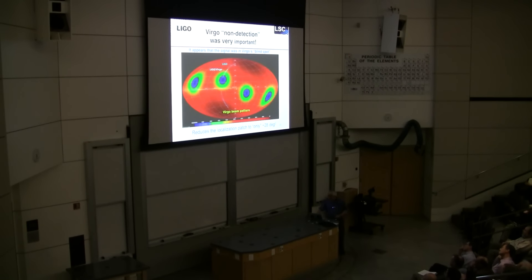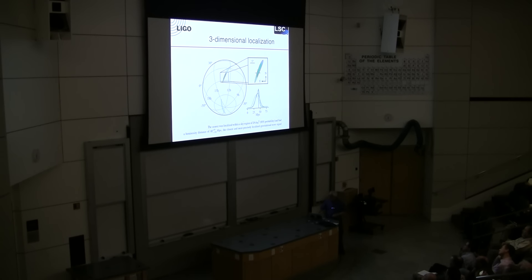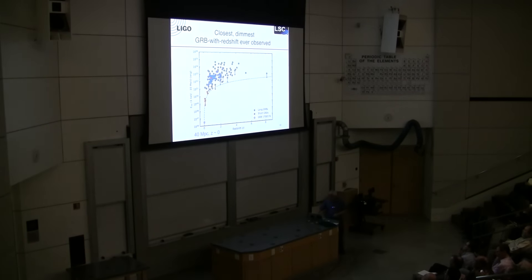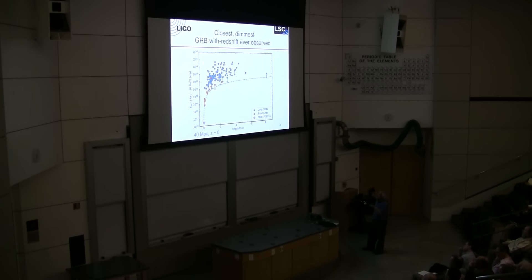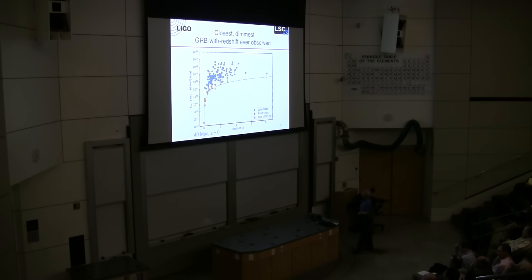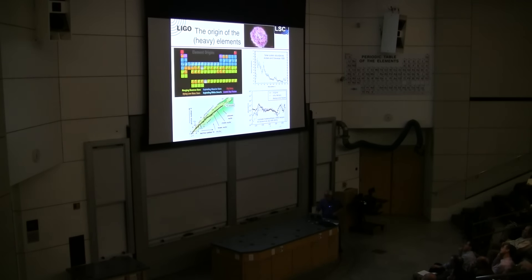The three-dimensional localization told us it was about 40 megaparsecs away, essentially a redshift of zero. On this redshift versus gamma-ray energy release plot of all the short and long gamma-ray bursts observed, our event is the closest and dimmest gamma-ray burst ever observed with a measured redshift. We'd like to understand why. A kilonova search was underway — we looked at galaxy NGC 4993.